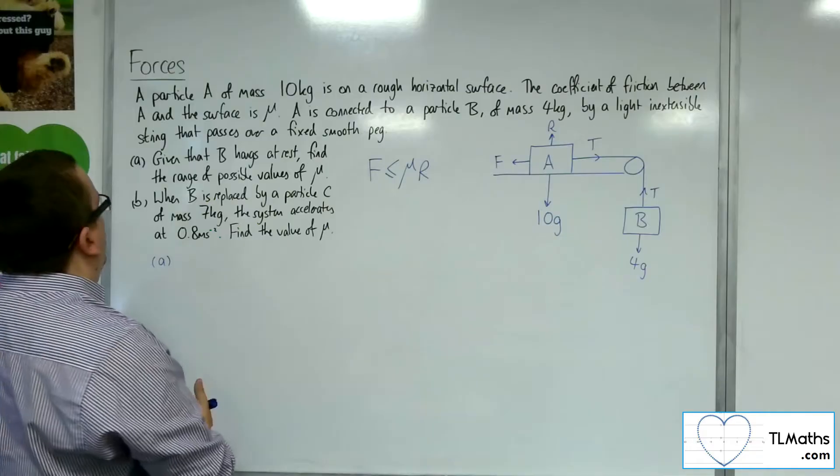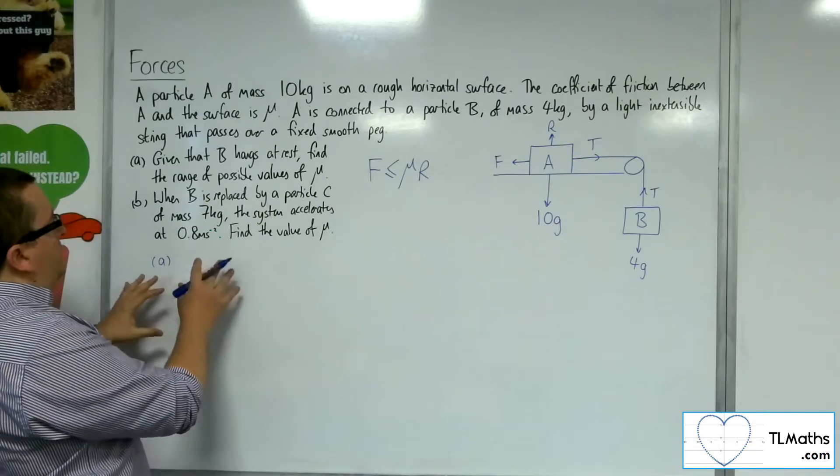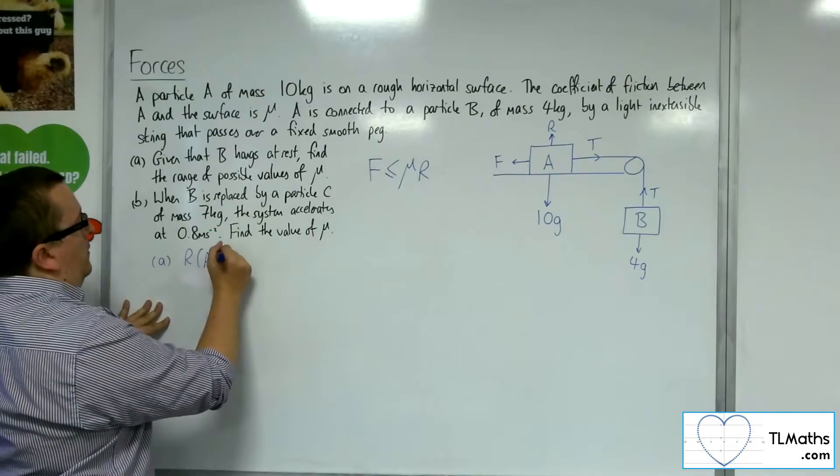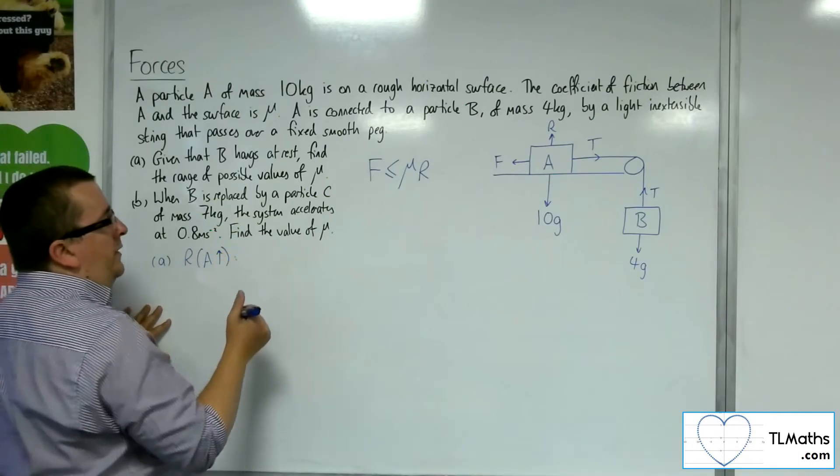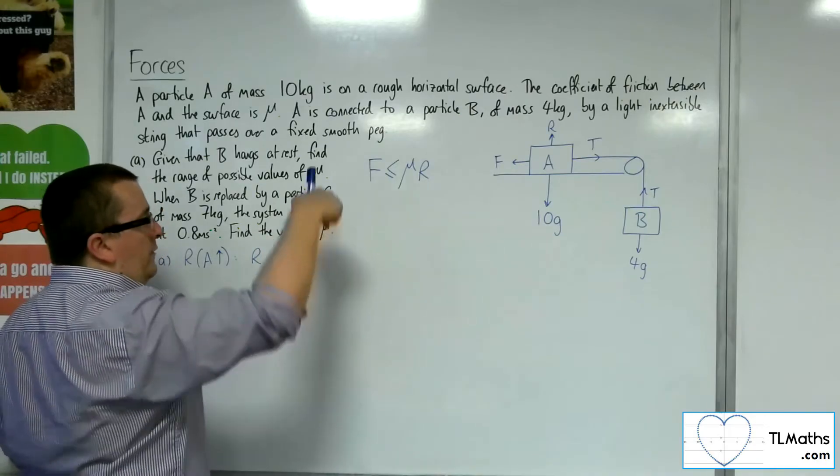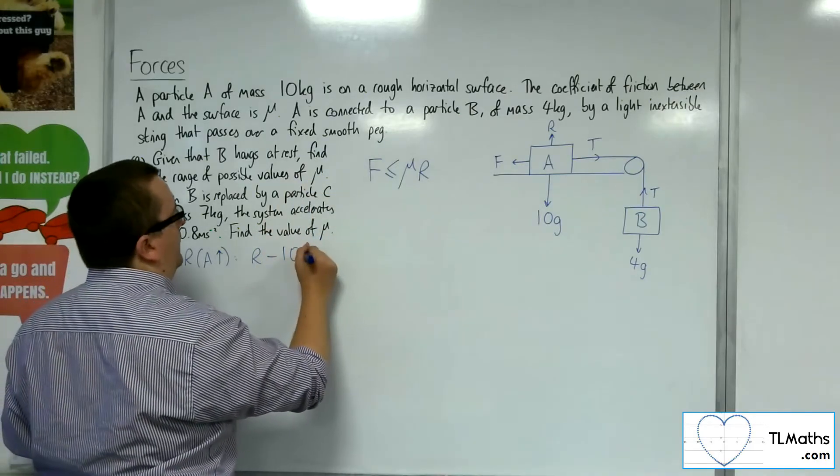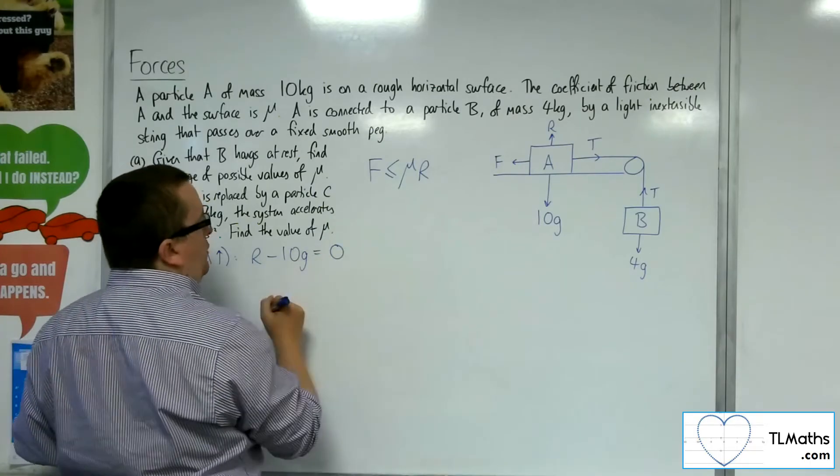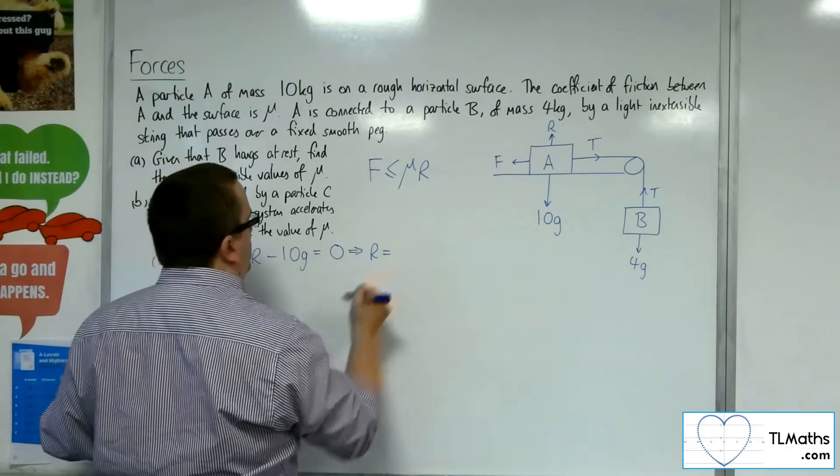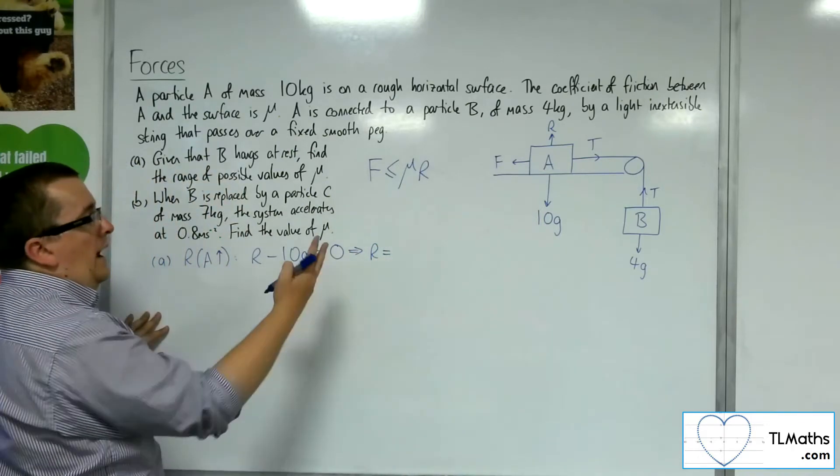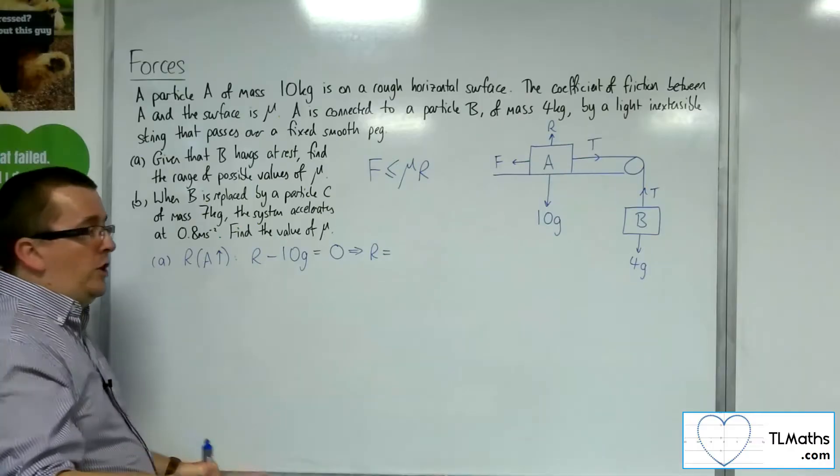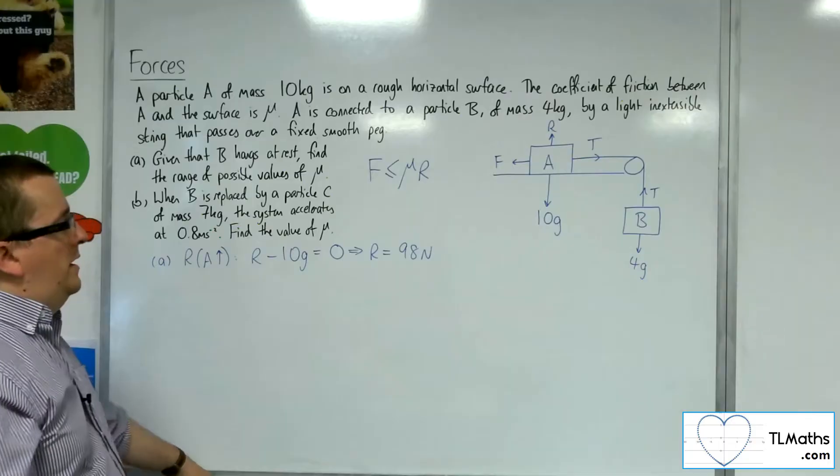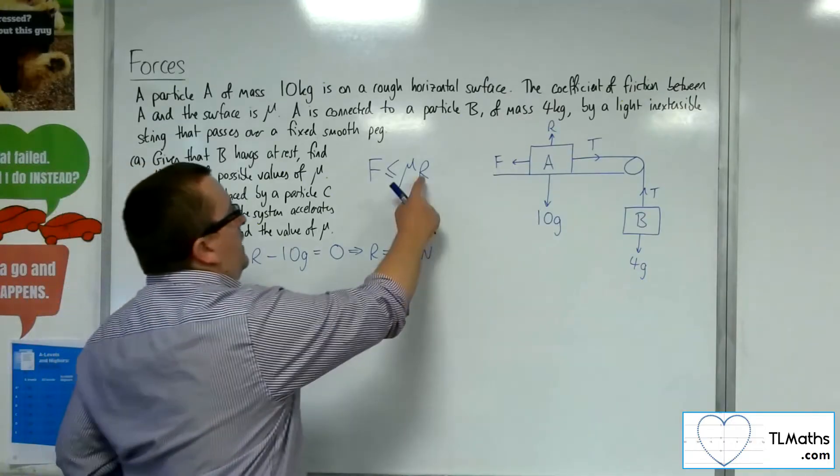Well, the normal reaction force, if I resolve A vertically, taking up as positive, then I will have R working upwards, I've got 10g working against me. There's no acceleration in the vertical direction, and so mass times acceleration will be 0. So R is just 10 lots of G, which, if I'm using 9.8 as G, will just be 98 newtons.